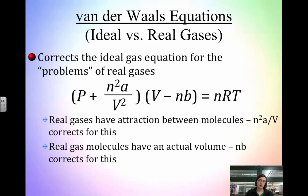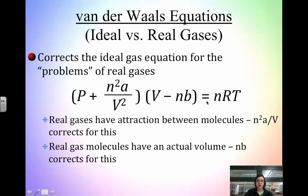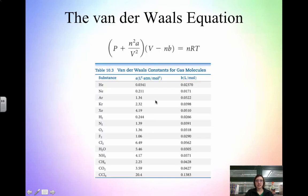The volume adjustment uses the term nb, which accounts for the fact that molecules do occupy some space on their own. Because real gas molecules have an actual volume, we use n times b, where n is the number of moles and b is a measure of the volume occupied by the molecules. The full equation then equals nRT — so it's still the ideal gas law, P, V, nRT, but with corrections for pressure and volume deviations.